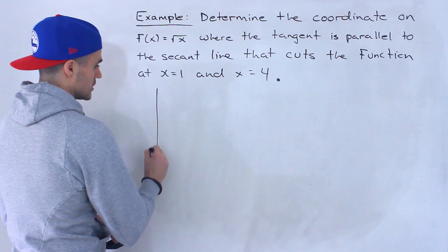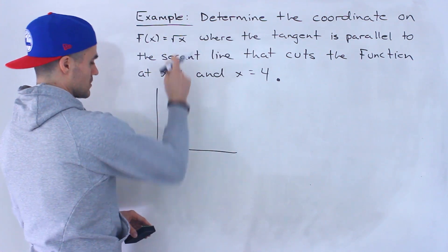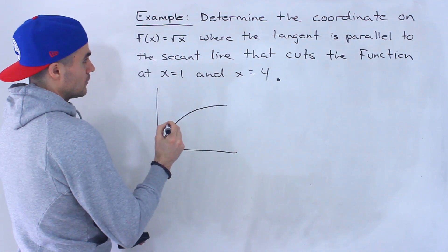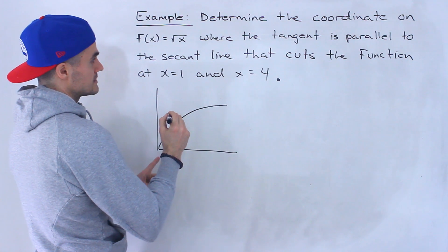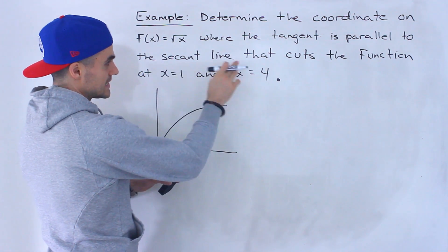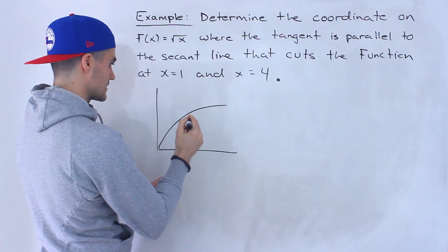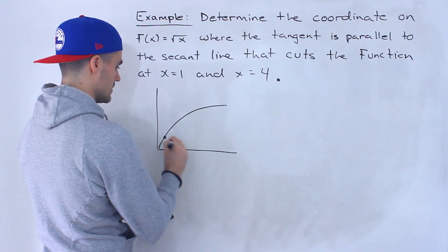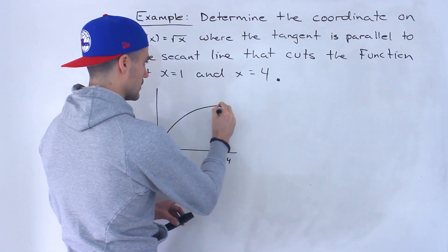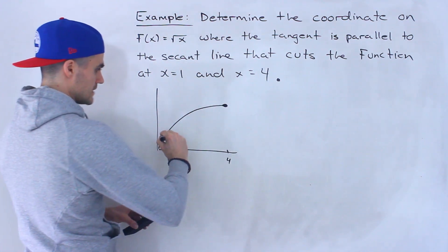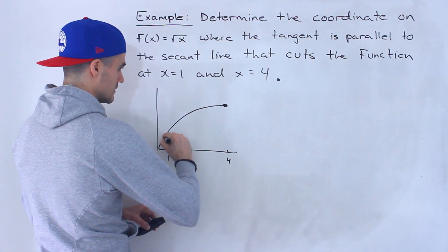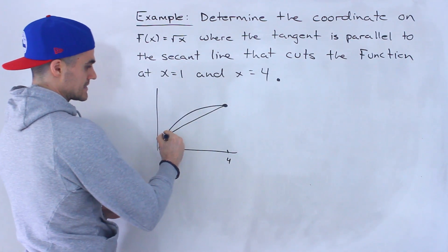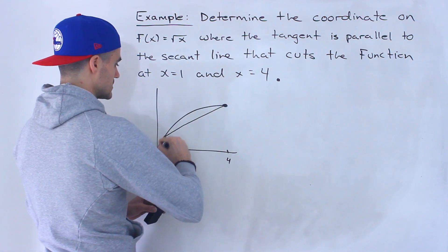To start this question off, I'm actually going to draw a quick diagram of what is happening. We have the function √x, and we know that function looks like this. We're told there's a secant line that cuts the function at x = 1 and x = 4. So let's say 1 is over here and 4 is over here. A secant line is always between two points — like average rate of change — and that's going to be the secant line right here on this function.